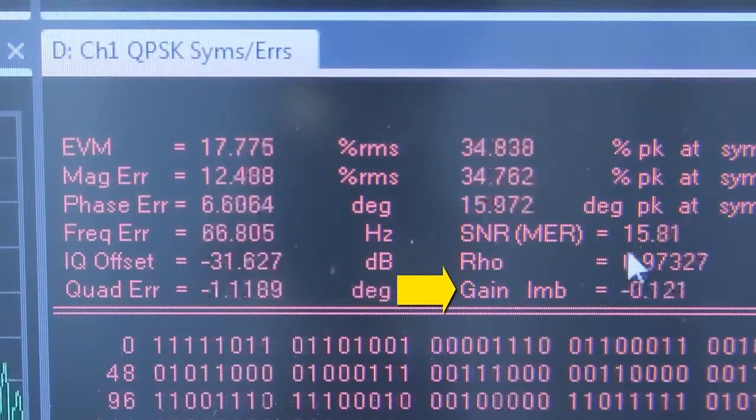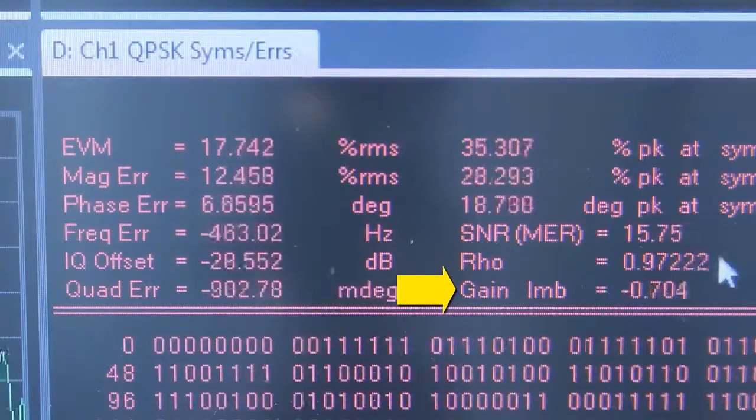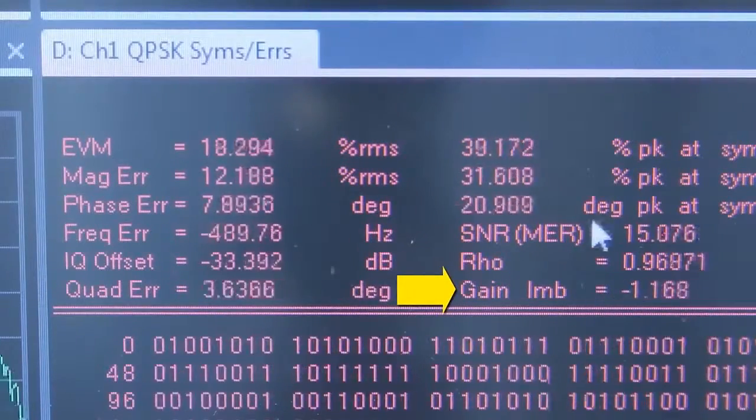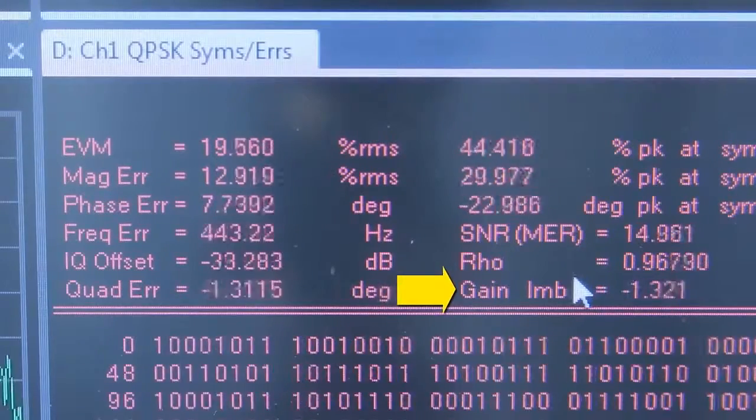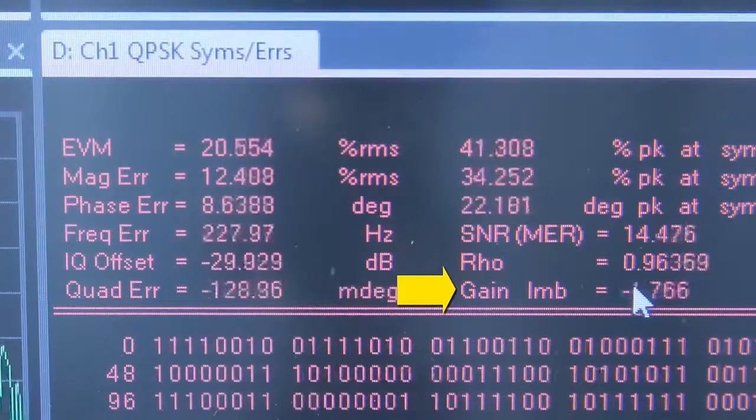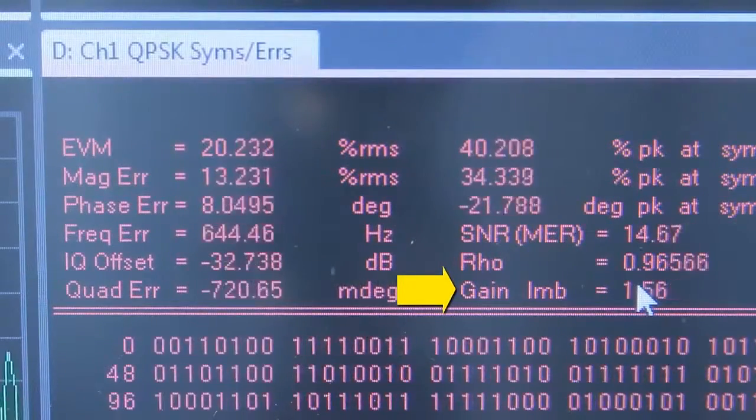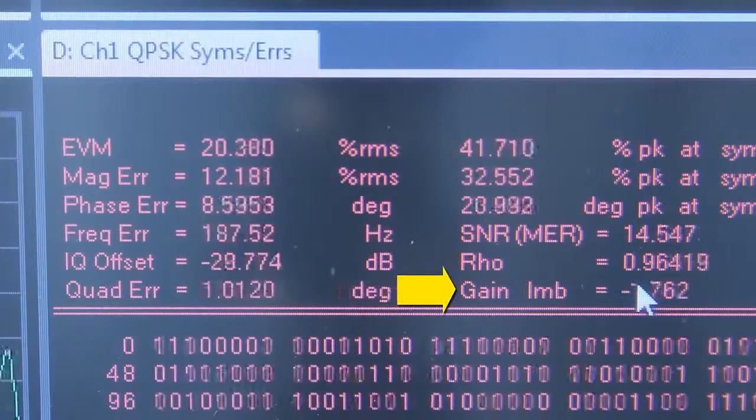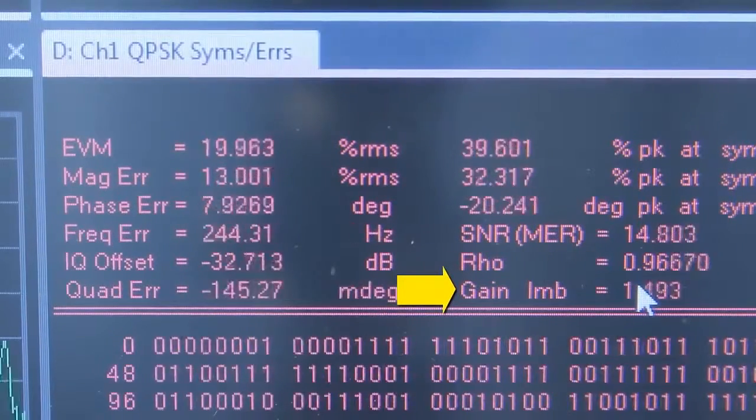It is going now from around 0 dB to 1 dB, almost 2 dB of gain imbalance while I have changed the amplitude by 0.2 volts on channel 1.